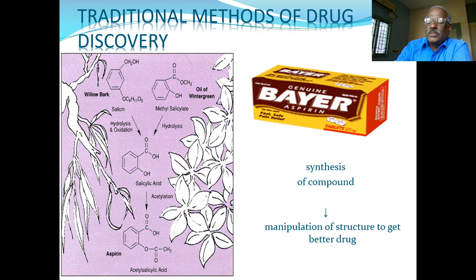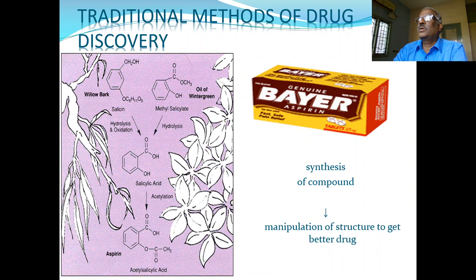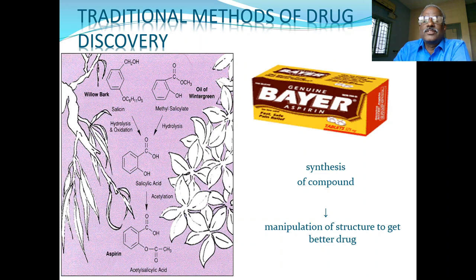First, I would like to discuss the traditional methods of drug discovery. There was a concept called the doctrine of signature. For example, a sliced section of the carrot looks like our eye. A sliced section of tomato looks like our heart — it has 4 chambers, and tomatoes also have 4 chambers. Lycopene, the most important antioxidant obtained from the tomato, has cardioprotective activity.